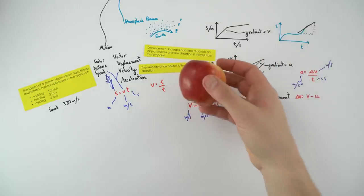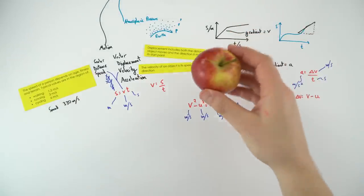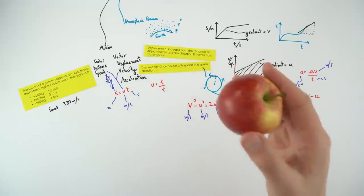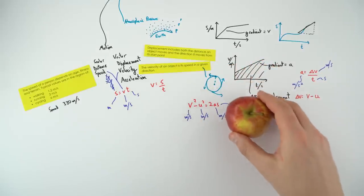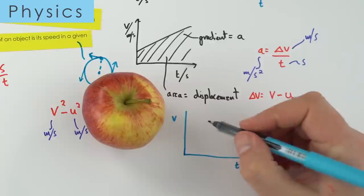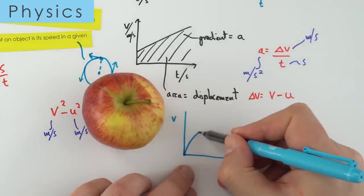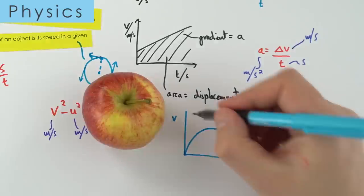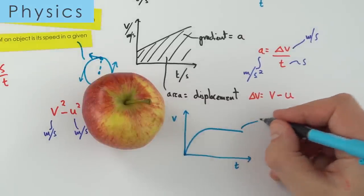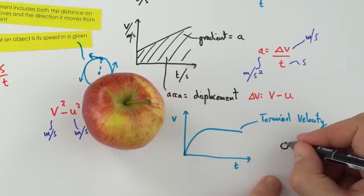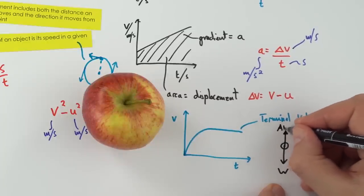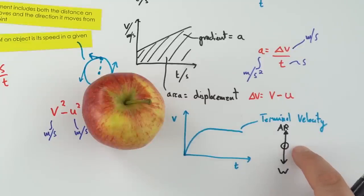When an object falls, it initially accelerates quickly, getting faster and faster. For a falling apple, there's a constant downward weight force, but air resistance increases as it speeds up. If we plot a velocity-time graph, the velocity eventually stops increasing — the object has reached terminal velocity. At terminal velocity there's no resultant force: weight equals air resistance, so there's no net force and it doesn't accelerate further.